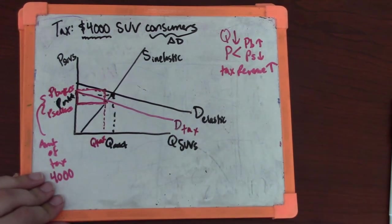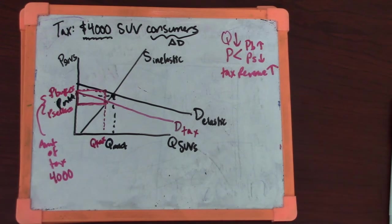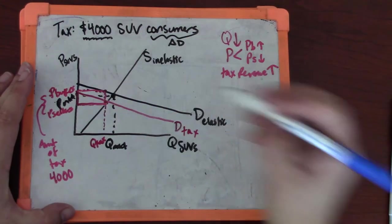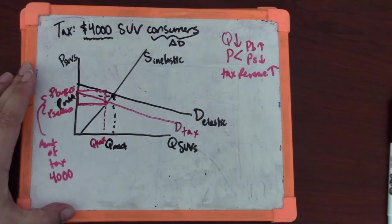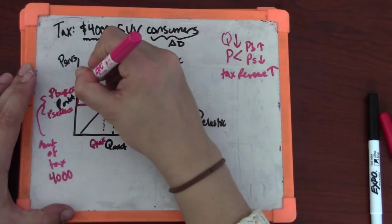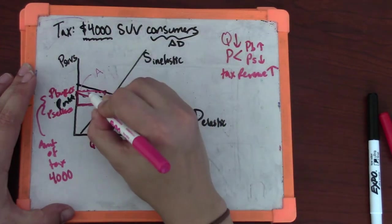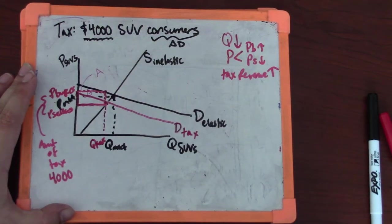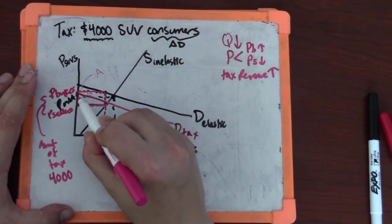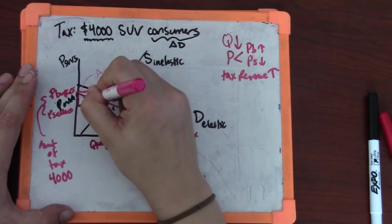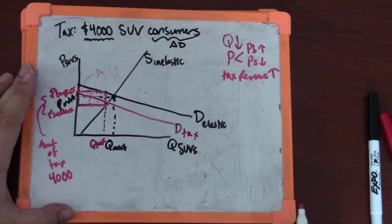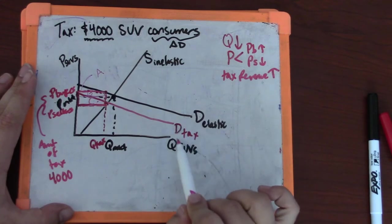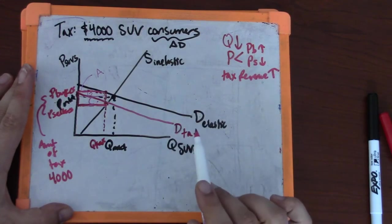Now if the question asked you to describe changes in consumer and producer surplus using letters, that's when you would need to put letters in. Apologies, my graph is a little bit small, but I'm going to try and label it with some letters. A is going to be that area right there. B is going to be that area right there; it spans the entirety of this rectangle. C is this area right here; it's on both sides of that red demand curve. Remember, this is an artificial manipulation by the government; it doesn't tell us how much consumers actually value SUVs.